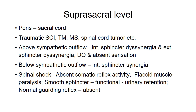Moving to the suprasacral level, the lesion is seen between the pons and the sacral cord, usually in conditions like spinal cord injury, transverse myelitis, multiple sclerosis, spinal cord tumor, etc. If the lesion is above the sympathetic outflow, there will be both internal and external sphincter dyssynergia, detrusor overactivity, and absent or reduced sensation below the level of lesion.